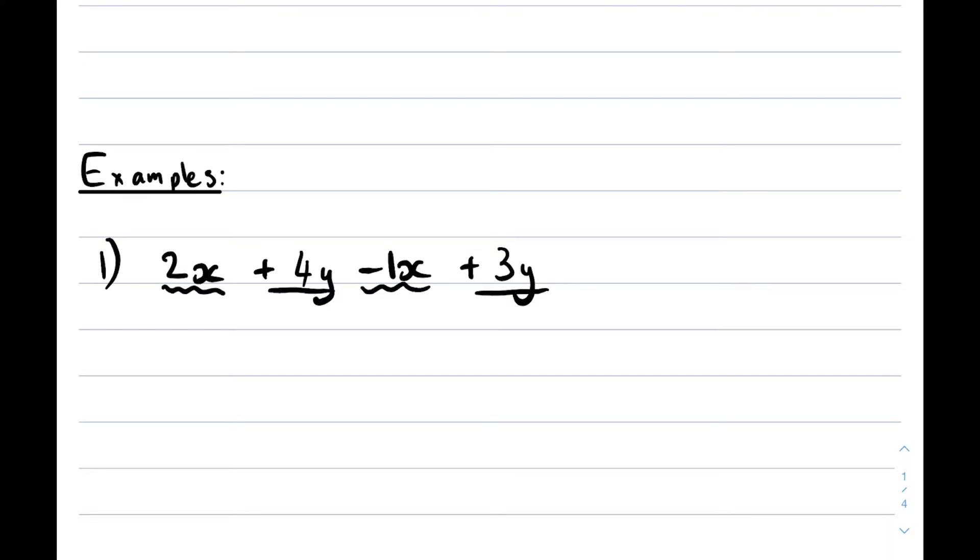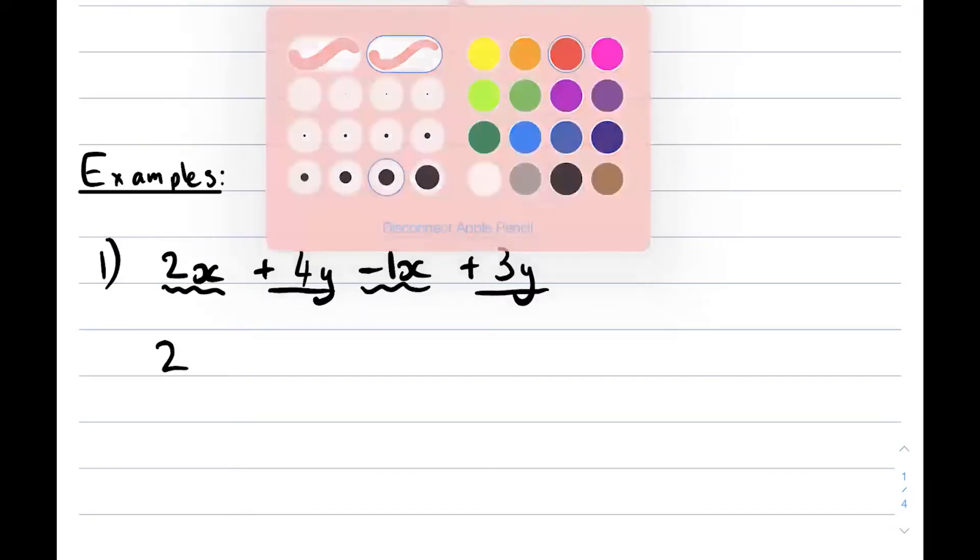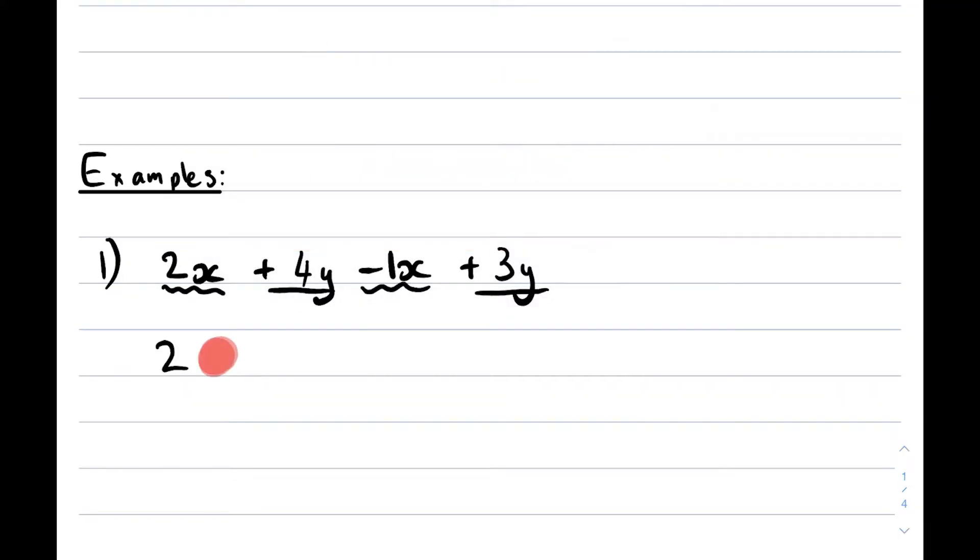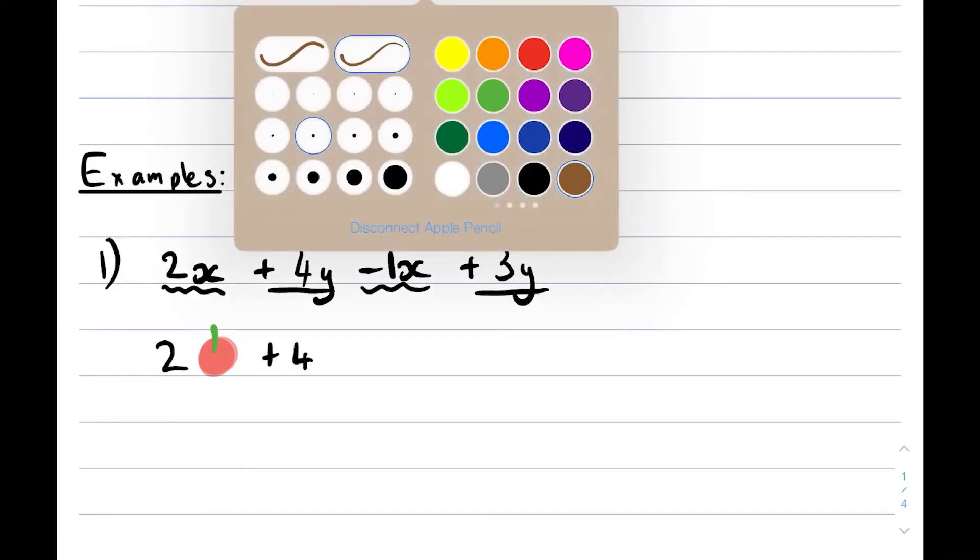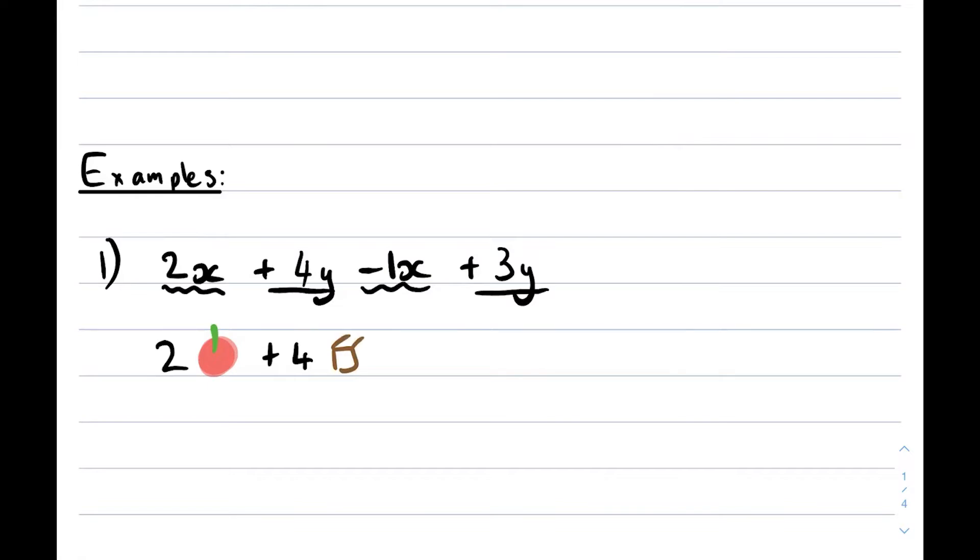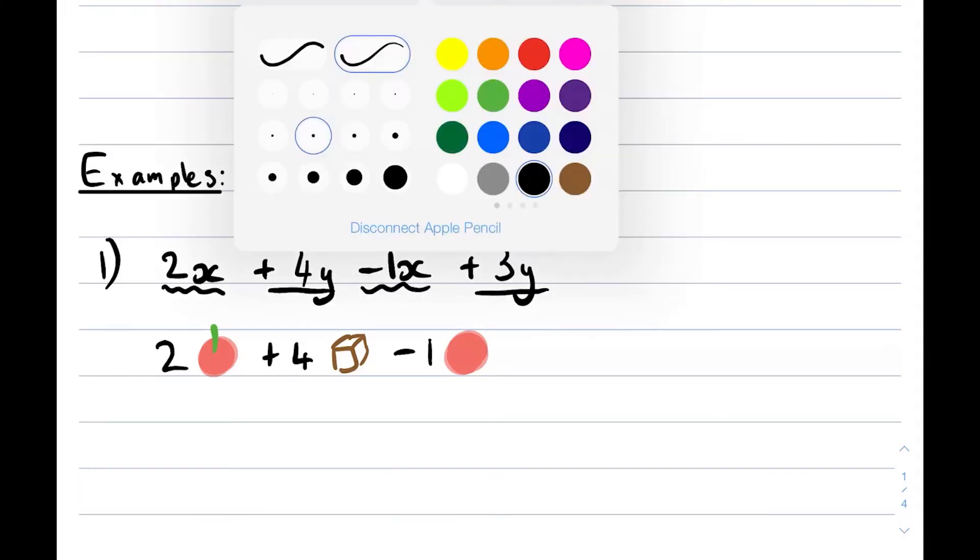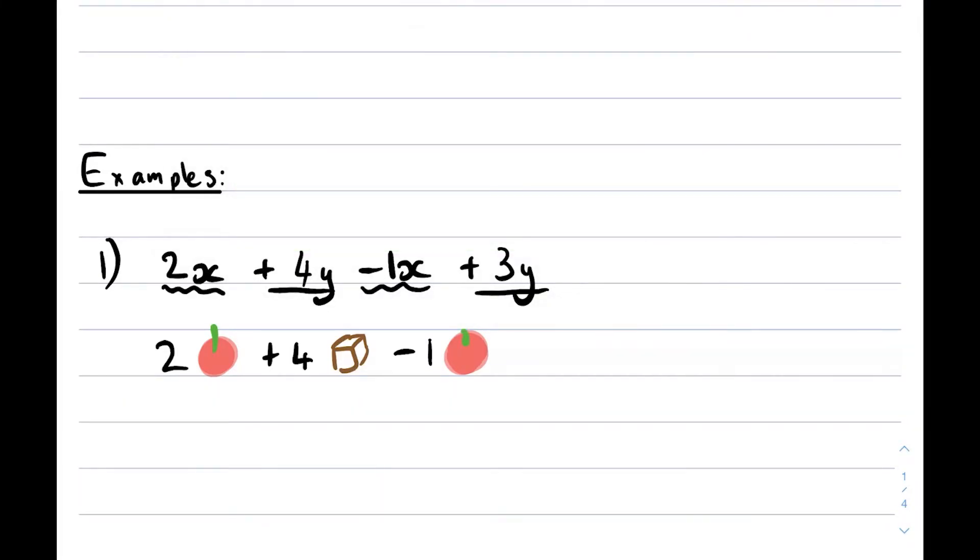A nice thing to do is if you think about an x as something as simple as an apple. So let's think about an x as an apple. You have two apples. Then you have positive 4 of whatever y might be. Let's think of y as like a box. So you have 4 boxes. And then again you have negative 1 of the x's, which is again your apple. So you have negative 1 of the apples.